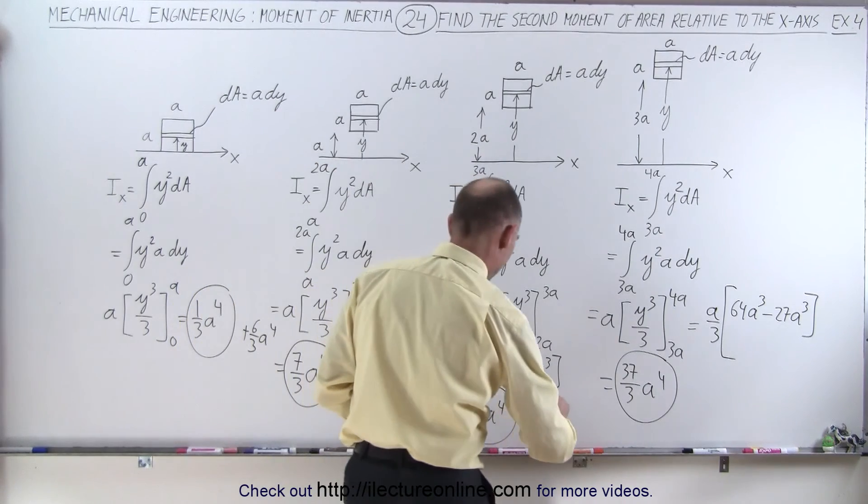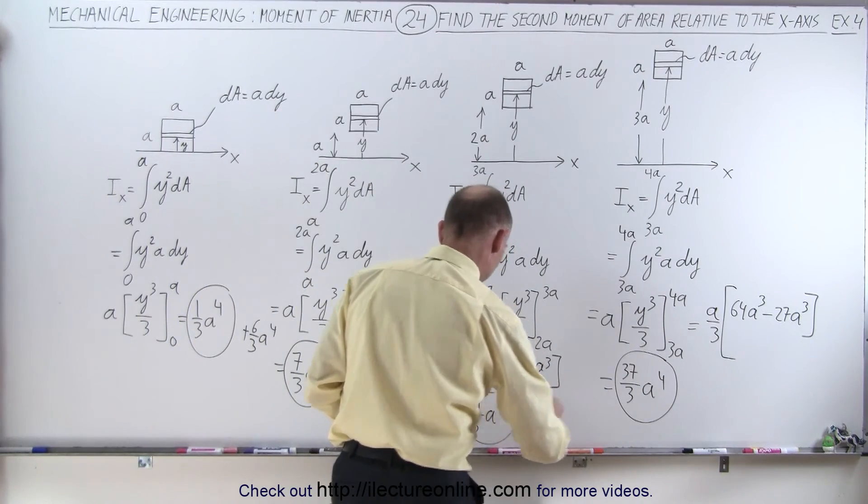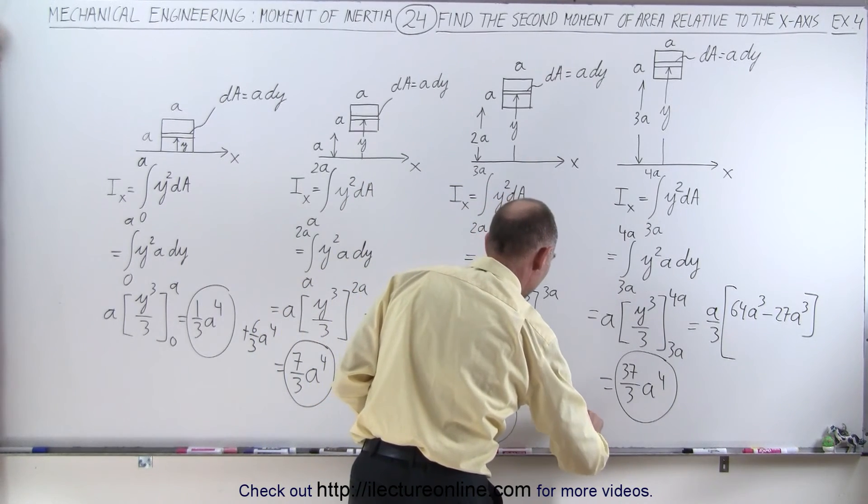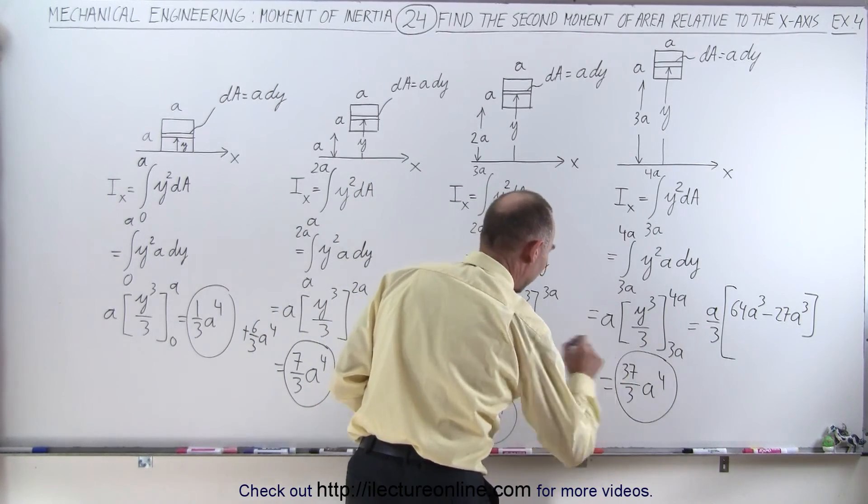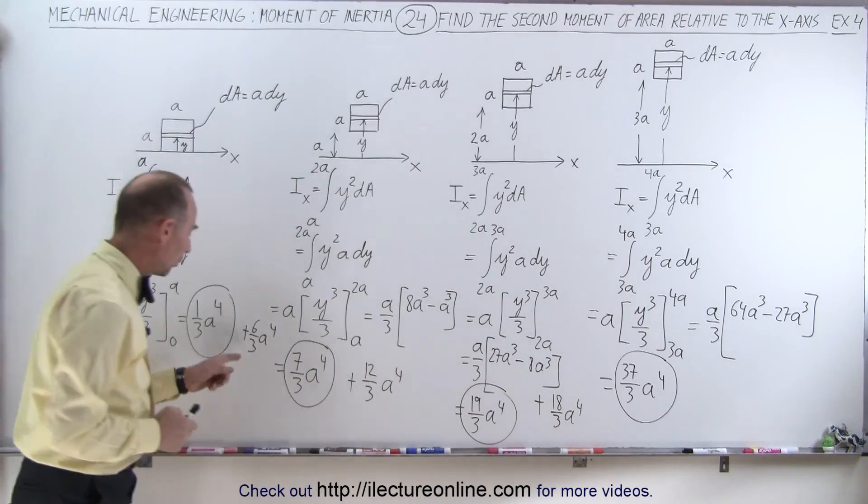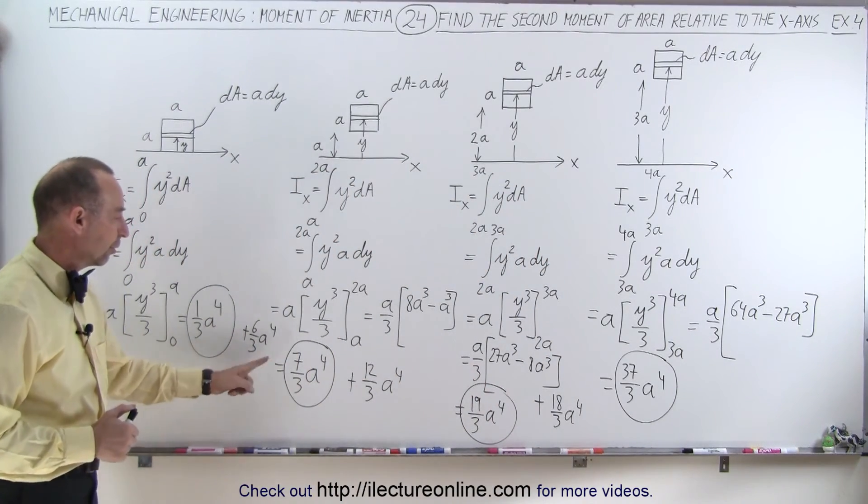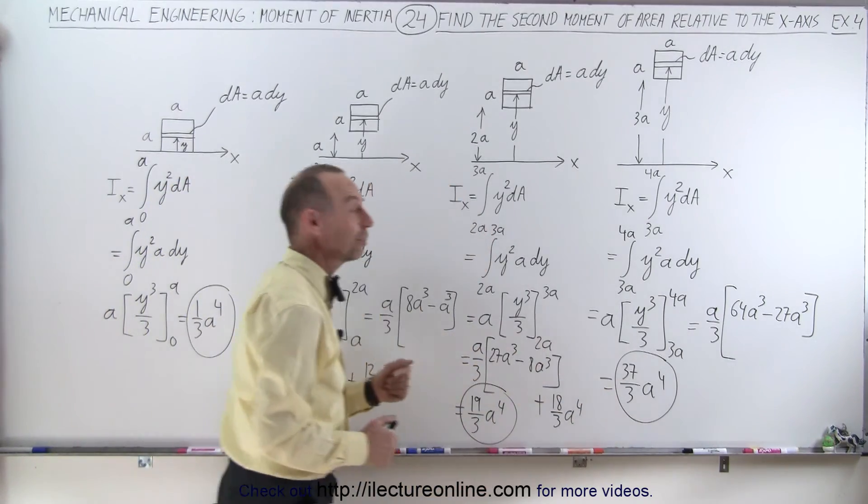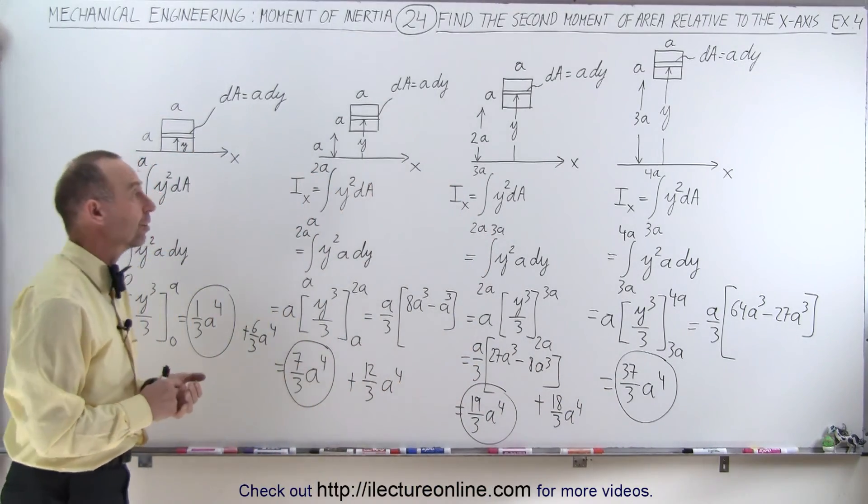And here, if I add from 19 to 37, that would be 18 over 3a to the fourth, I get that. Now, that would be 2a to the fourth, 4a to the fourth, 6a to the fourth, added to the previous result to get the next result.